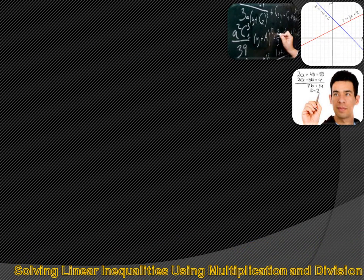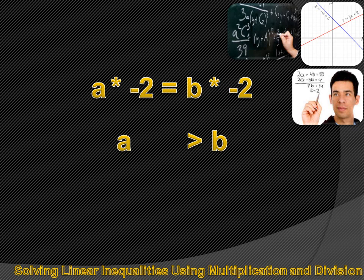Here's where it gets tricky. If A equals B and you multiply both sides by minus 2, it's still equal — minus 2A will equal minus 2B. However, if A is larger than B and you multiply both sides of the inequality by minus 2, it's no longer the same. A times minus 2 will be less than B times minus 2.